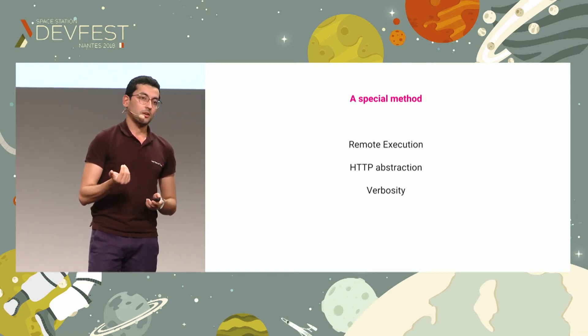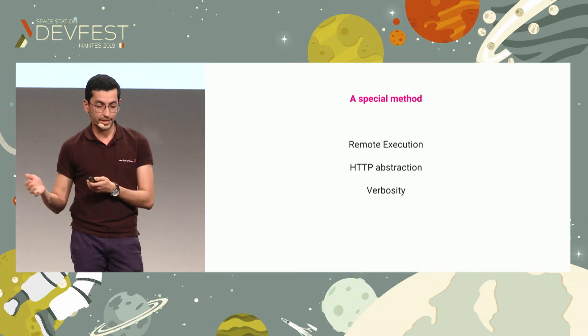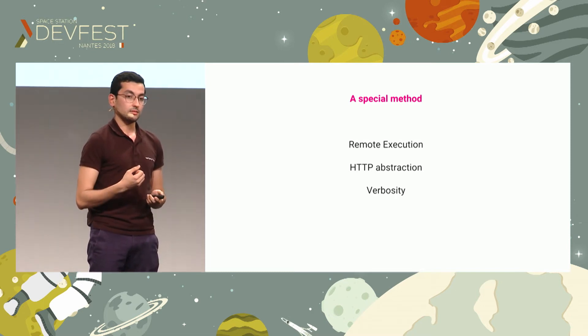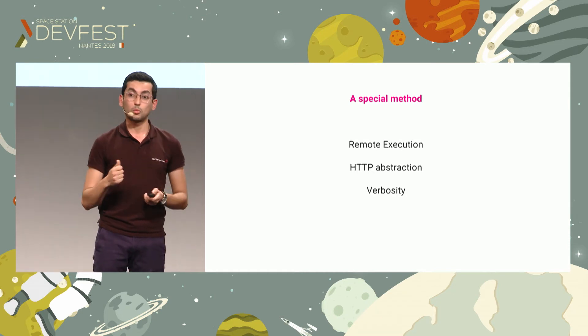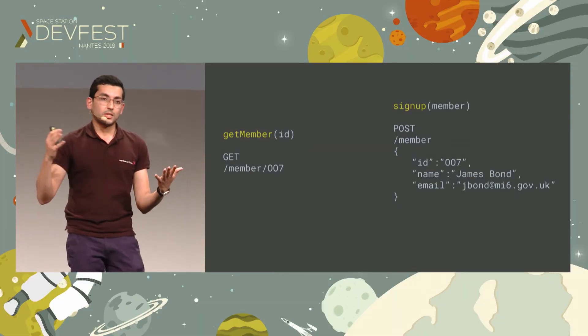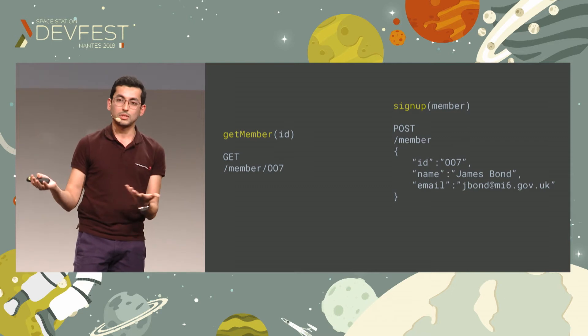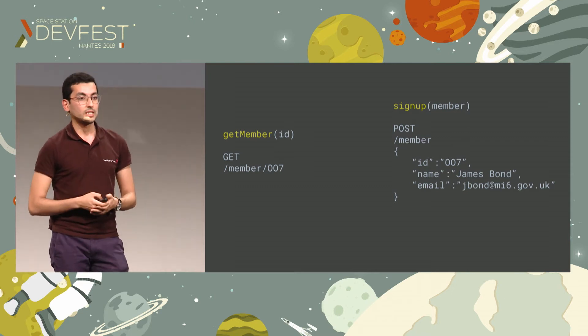What I like about calling methods is that when you write them correctly, methods are verbose and self-explanatory. Methods can describe what they will be doing and the operations they will be executing. For example, if you want to get some information about a member, you just call a method called getMember — translated as a GET call to the member endpoint with the path 007. And MI6, when they hired James Bond, they signed him up — so a signup method — translated as a POST call to the member endpoint.